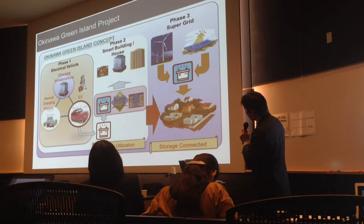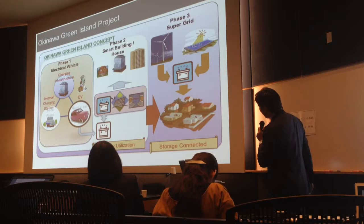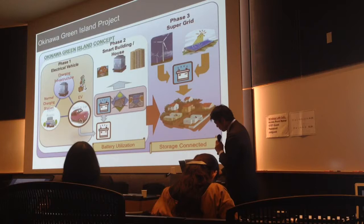Phase one is electrical vehicles. Phase two is installing batteries in buildings, houses, or hotels. And then phase three connects the power grid with electrical vehicles and smart buildings. Okinawa wants to build an exchange system integrating these elements. These are the three phases.